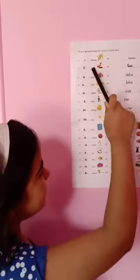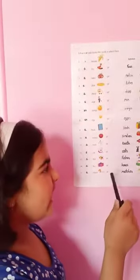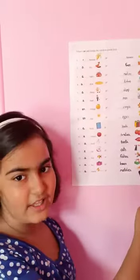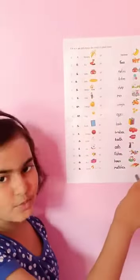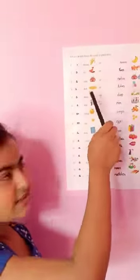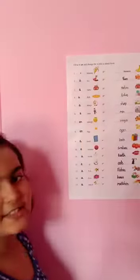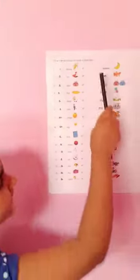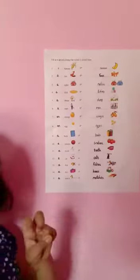Here you can see these are written singular and these are written plural. Let's see the first example. A banana means one banana, and many bananas means more than one.